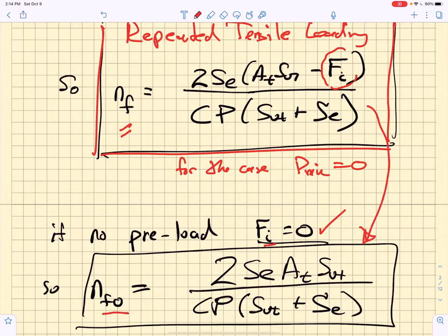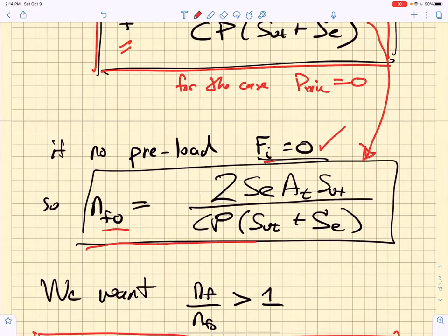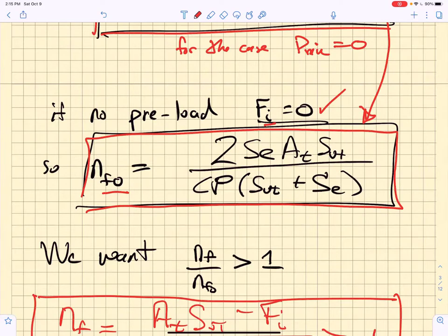That reduces to this simple equation shown here. We just let fi go to zero. Now what we want is to apply a preload so that our fatigue factor of safety with a preload is larger than the fatigue factor of safety without a preload.